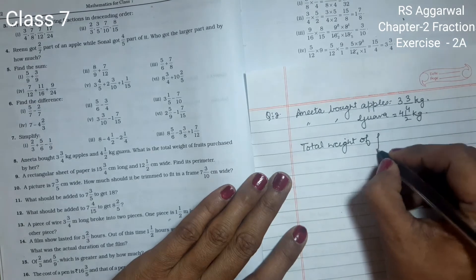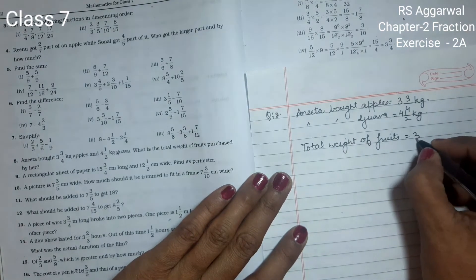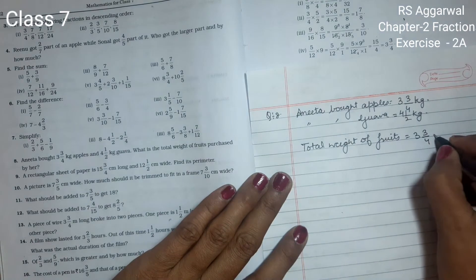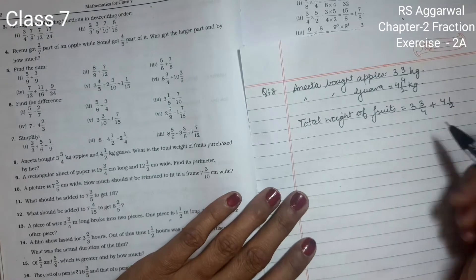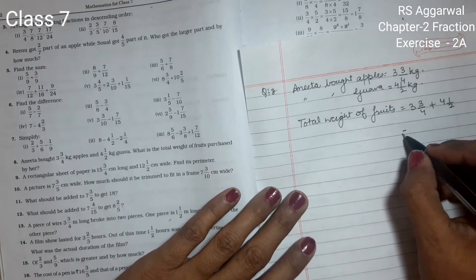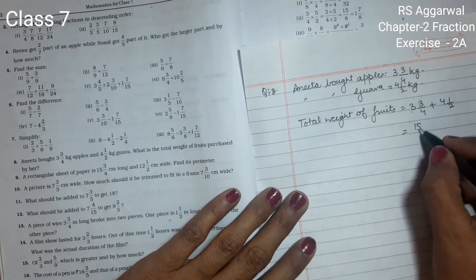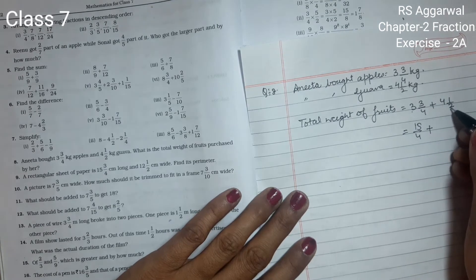Total weight equals 3 whole 3 upon 4 plus 4 1 upon 2 kg. Now I will convert to improper fraction: 3×4 is 12, 12 plus 3 is 15 upon 4, plus 4×2 is 8, 8 plus 1 is 9 upon 2.